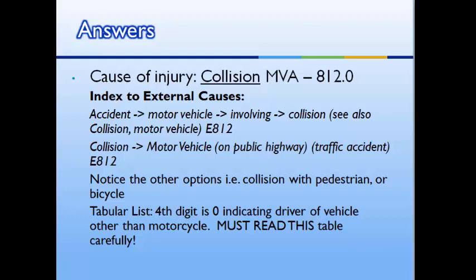While you're there, notice some of the other options when coding collisions — it can be with a pedestrian, bicycle, and other sorts of objects. When we go to the tabular list — because remember we always go to the tabular list — we need to find a fourth digit. Looking at the table of options for the fourth digit, we choose zero, because in this scenario our patient is the driver of the vehicle. Read this table very carefully.